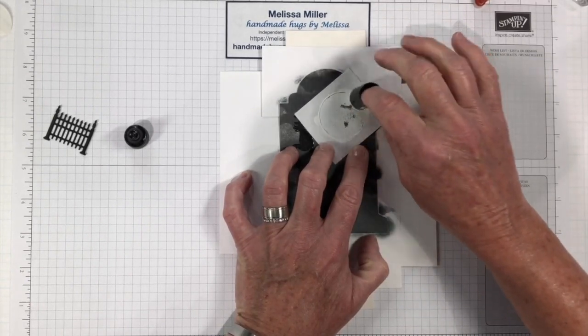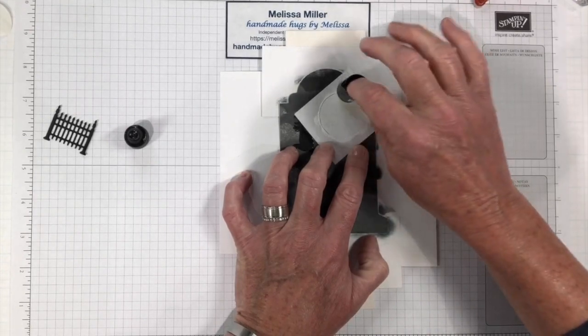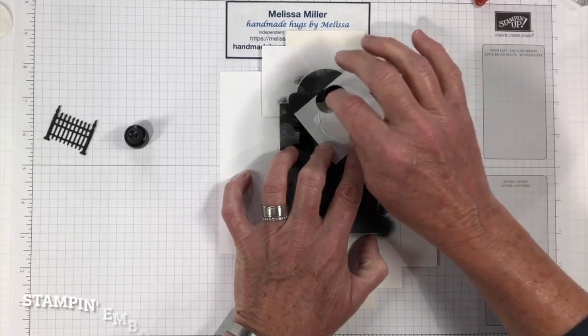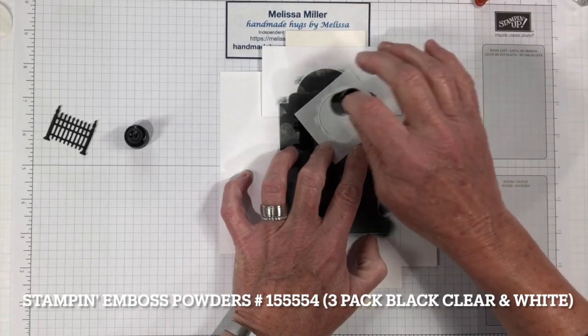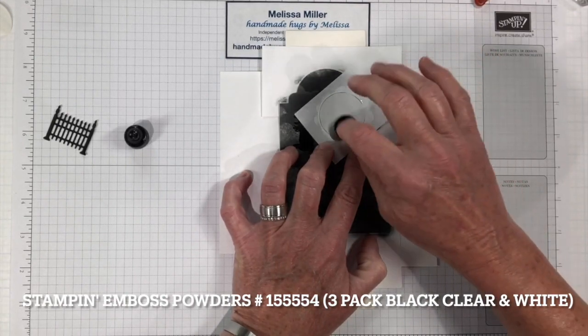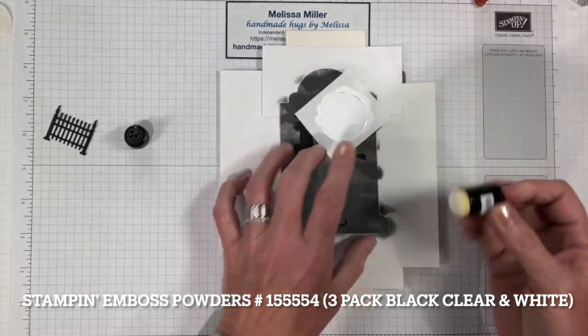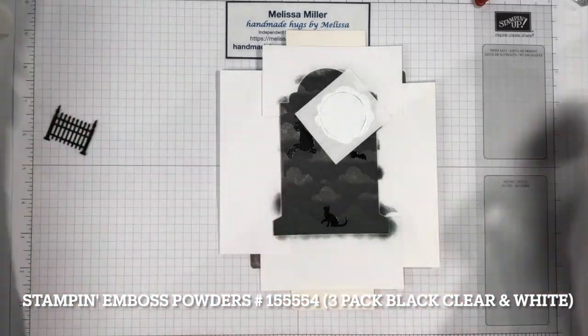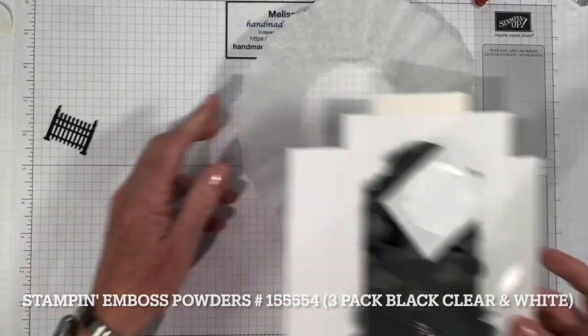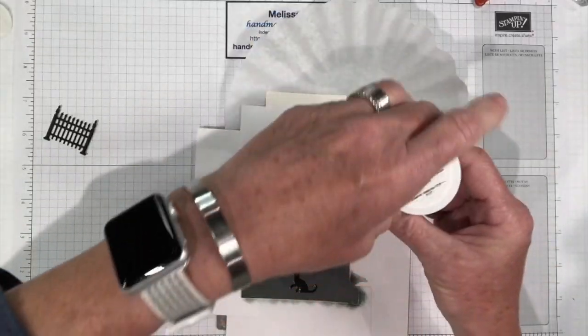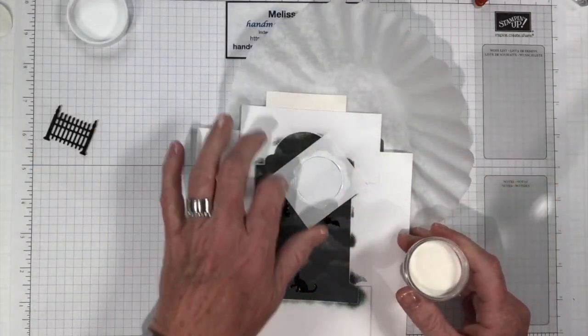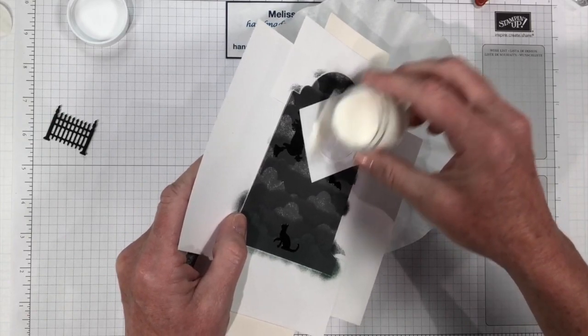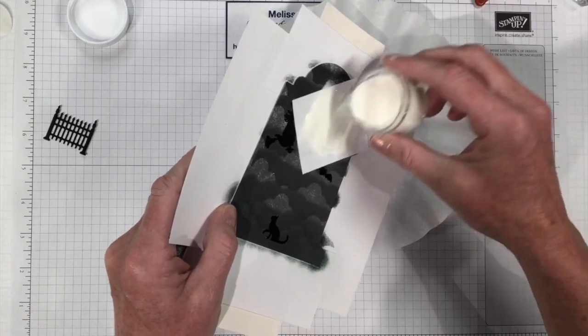But we don't want it too white. We still want a little bit of the background to show. So I just added the clear embossing powder instead of the white embossing powder. And we're going to leave that there. Let's bring in our coffee filter. This is our clear embossing powder. Leave that on there because I want to make sure that the embossing powder doesn't go anywhere else.